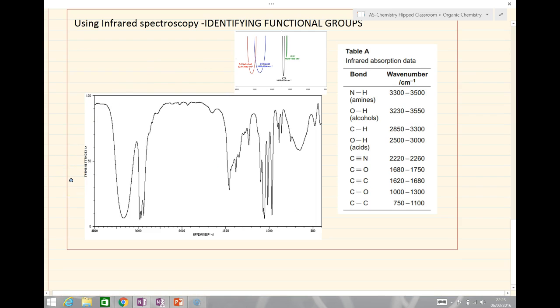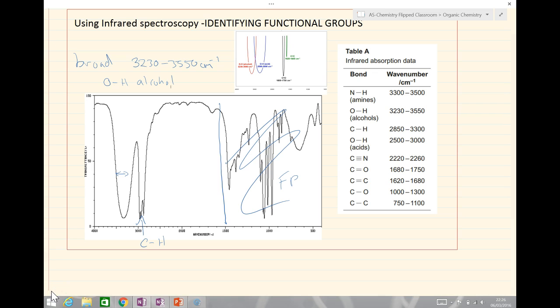This next one - let me identify where the fingerprint region is again. This is only useful if we can compare directly with a known sample. Here we have carbon-hydrogens once again. The only peak from functional groups is this broad peak at around 3230 to 3550 wave numbers, due to the OH from an alcohol group. Notice this is always broad, due to a very fast proton transfer that occurs in alcohol groups. This is actually from propan-1-ol.